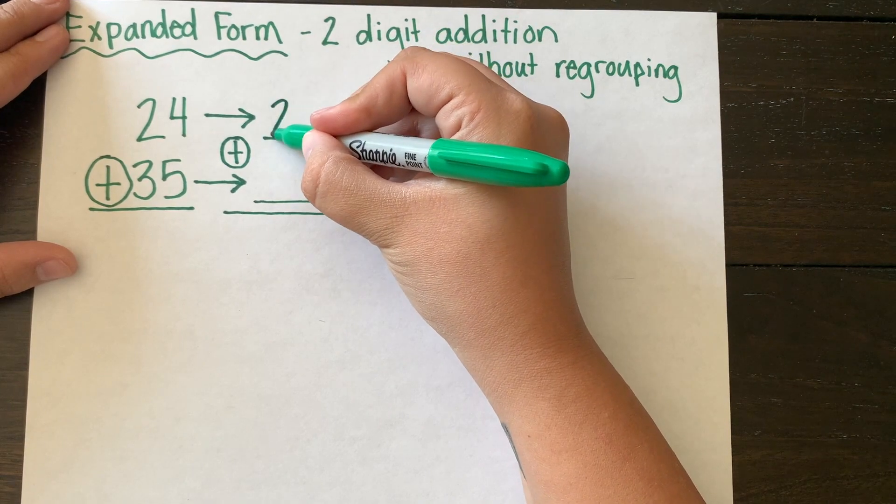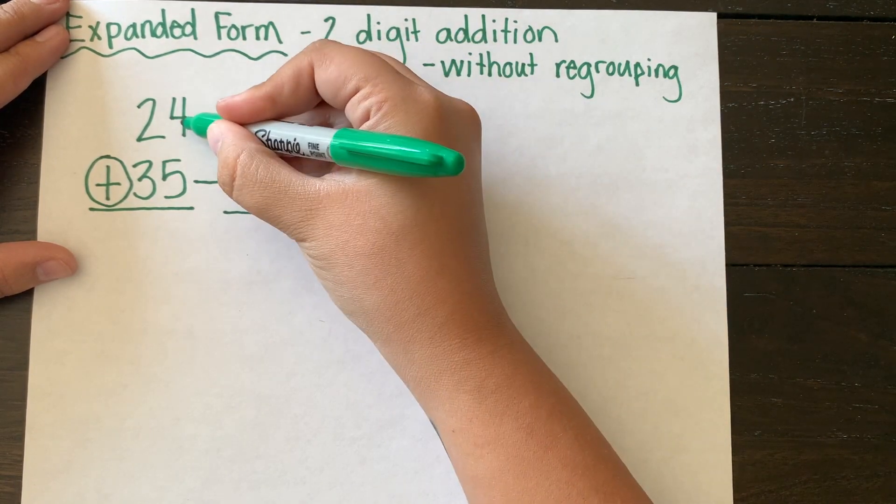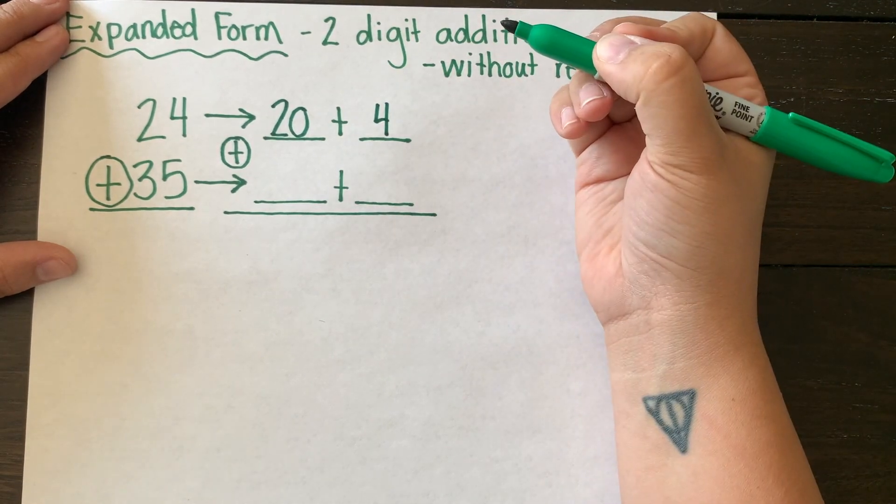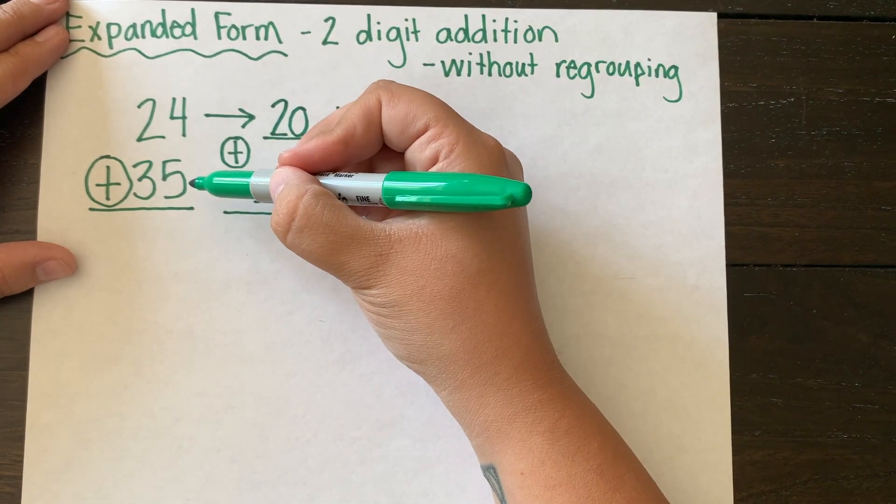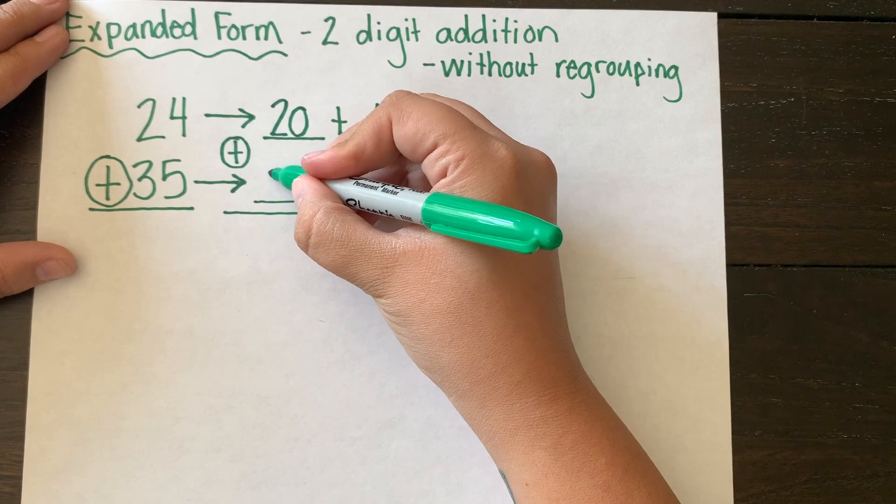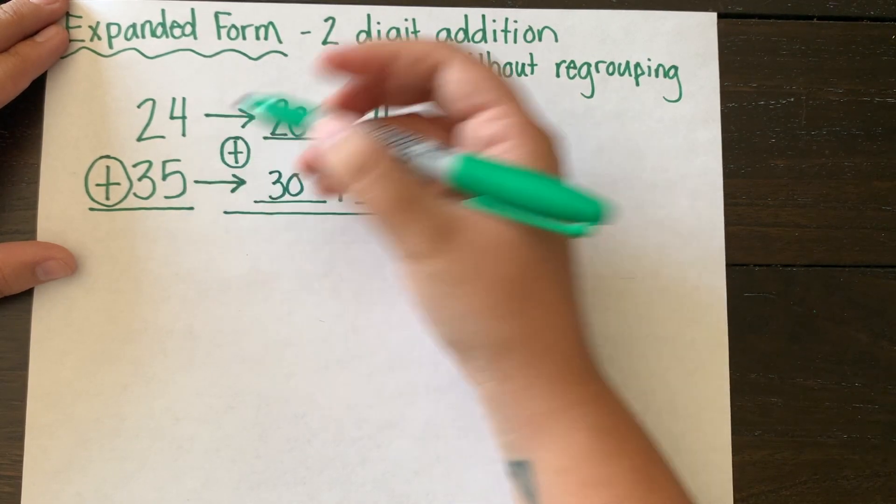So I see I have 24, which is 20 plus 4. Then I'm going to expand out 35, which is 30 plus 5.